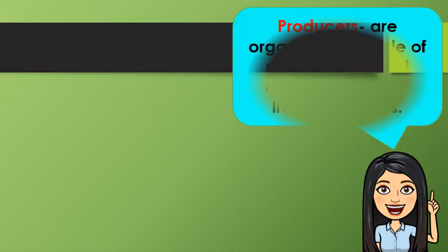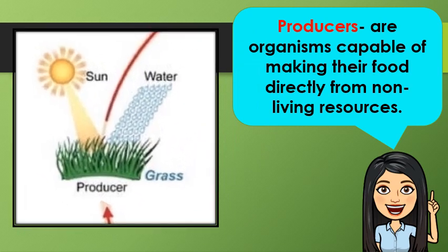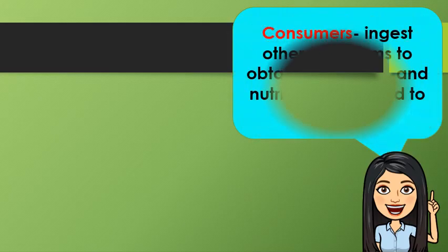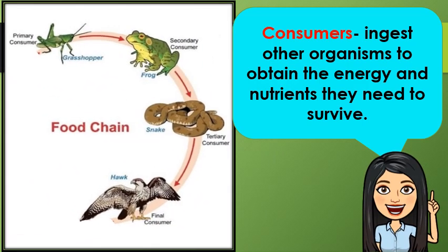What are the producers? Producers are organisms capable of making their own food directly from non-living resources. Examples of producers are grasses or other plants. How about consumers? Consumers ingest other organisms to obtain the energy and nutrients they need to survive. The primary consumer is the grasshopper, the secondary consumer is the frog, the tertiary consumer is the snake, and the final consumer is the hawk.